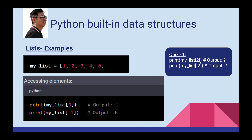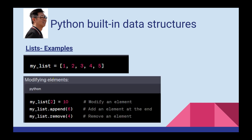To print my list, use print my_list. You can see it is mutable — my_list is 1, 2, 3, 4, 5. You can see it modifying elements. You can also create a list: my_list_2, then use append to add elements and remove to delete elements, for example remove(4).